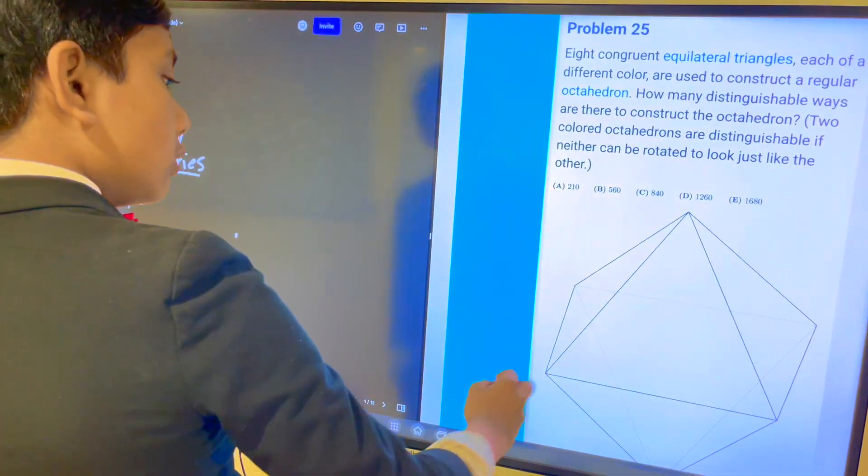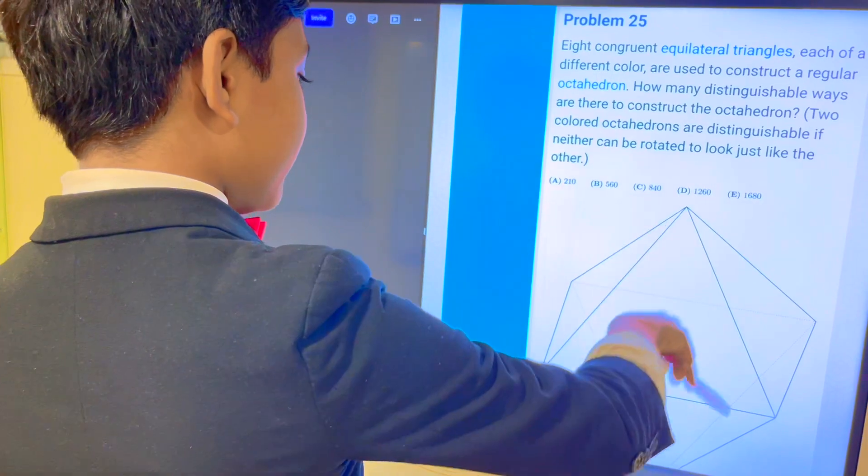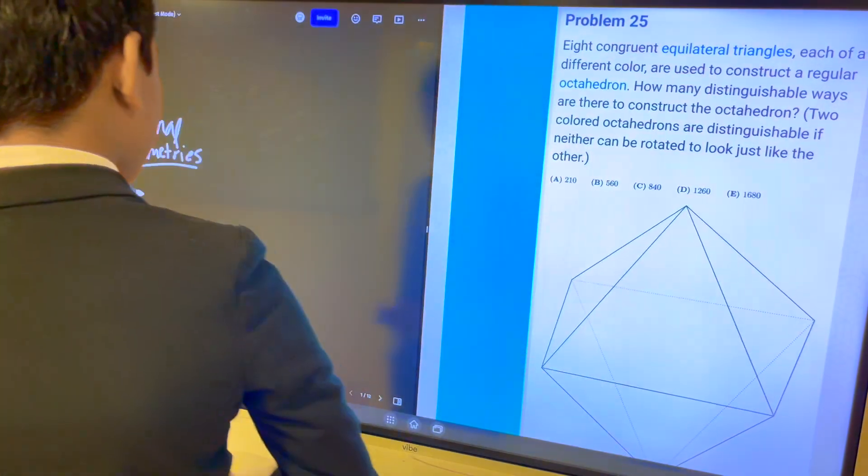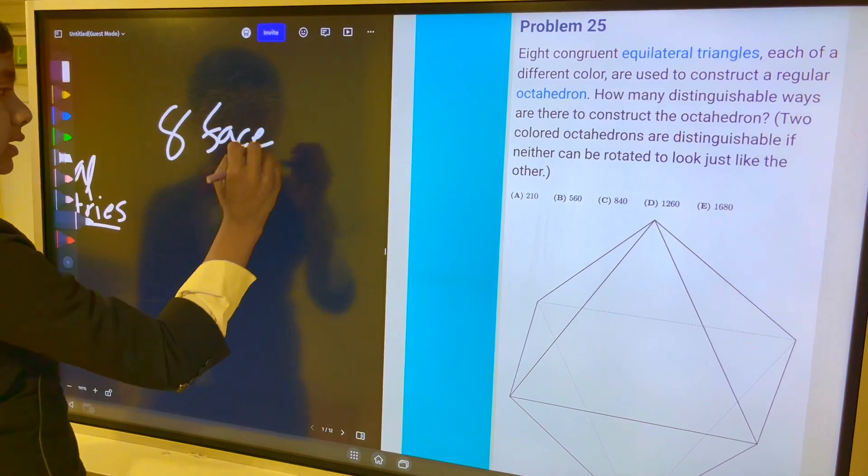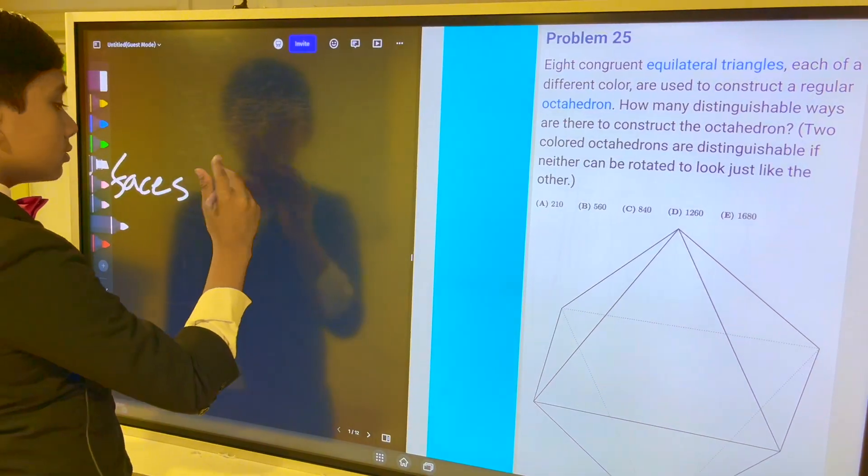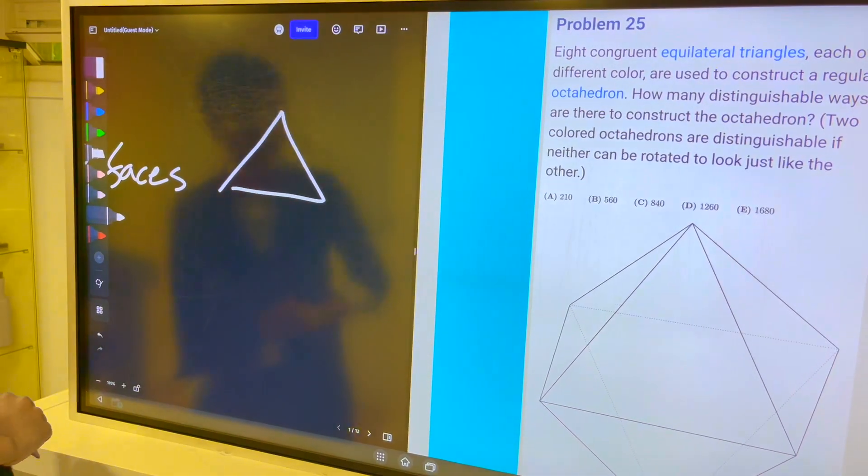Well, we notice that there are eight faces, right? So, there are eight faces. And now, let's take one of them, which is an equilateral triangle.